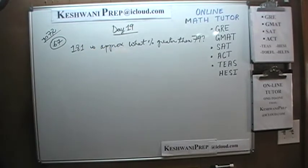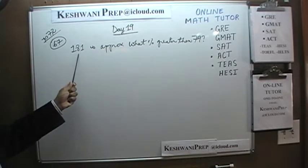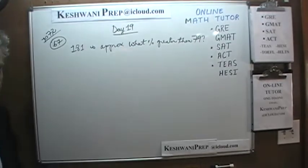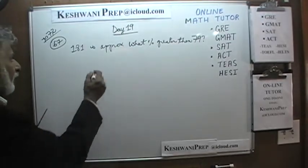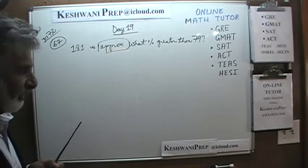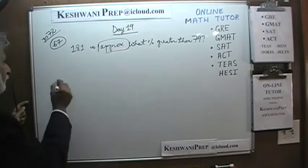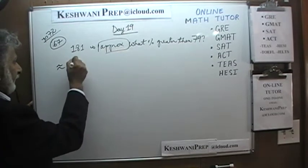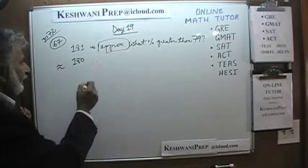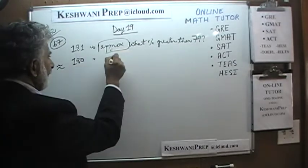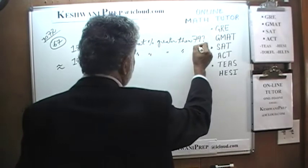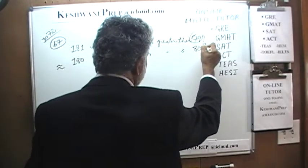Let's take a look at the very first problem on page number 67. It says: 181 is approximately what percentage greater than 79? The word here is approximate, which means we are not looking for a precise answer. So let's do approximations. Instead of 181, we are going to use 180. Instead of 79, we are going to use 80.